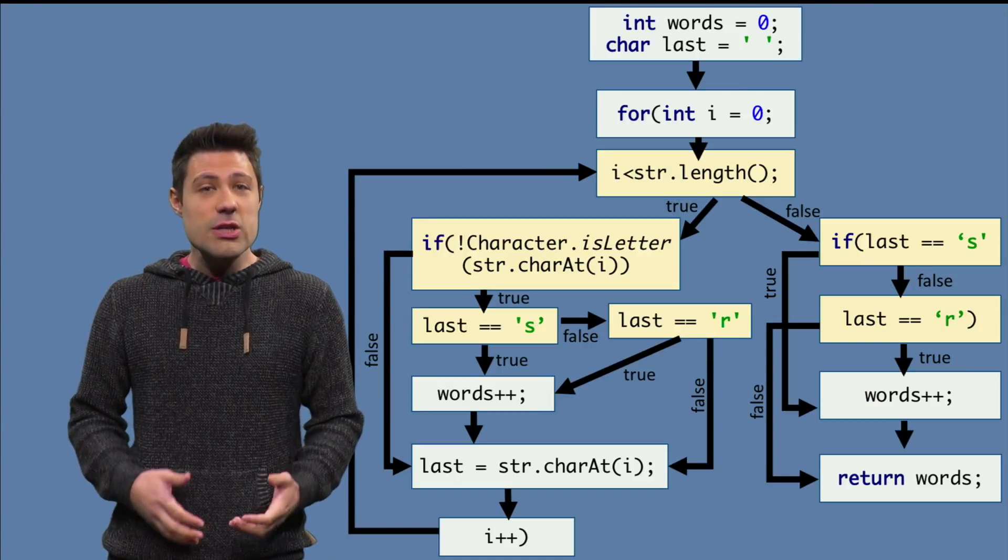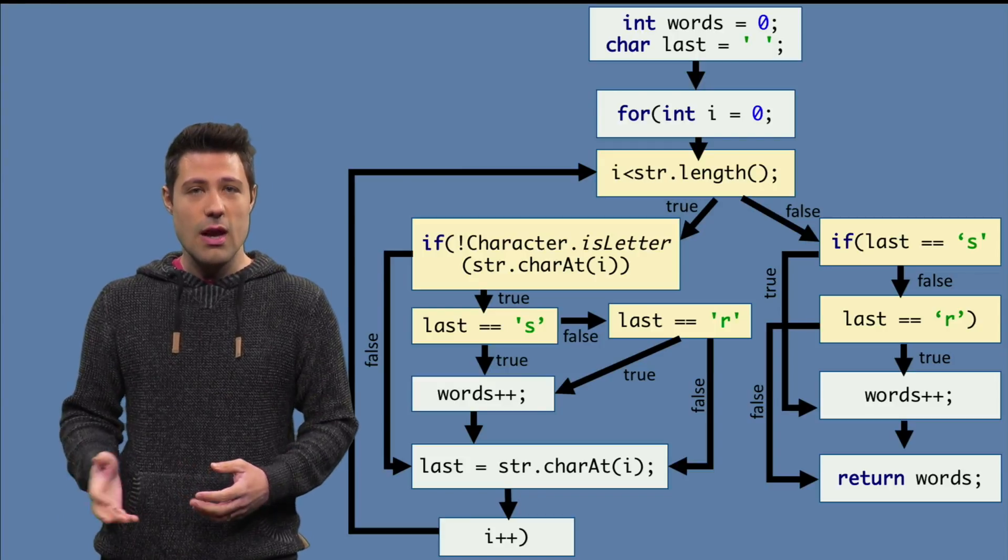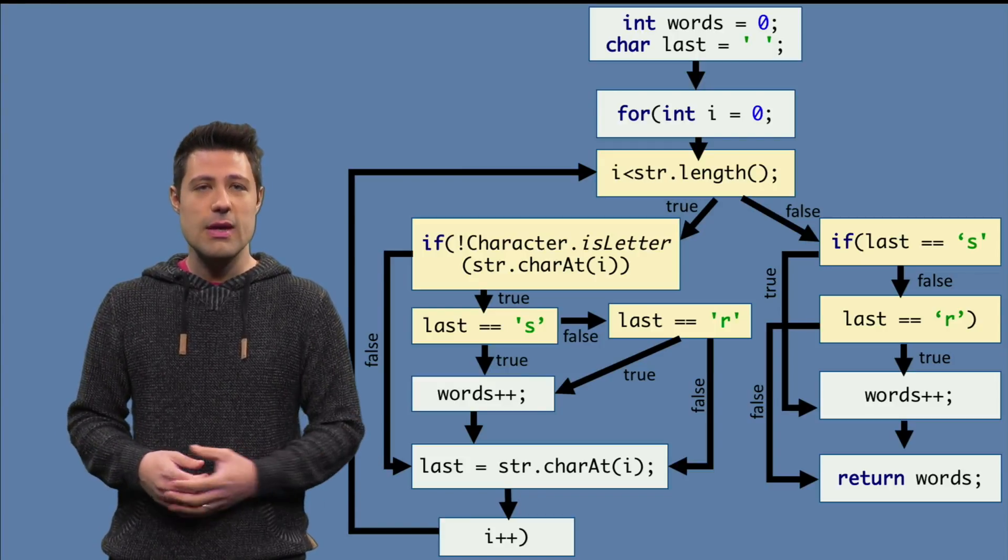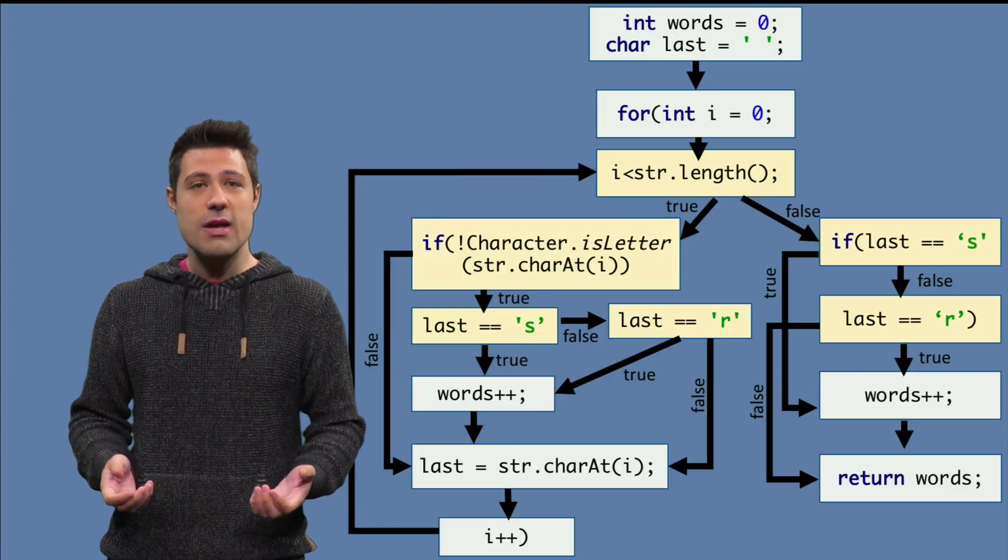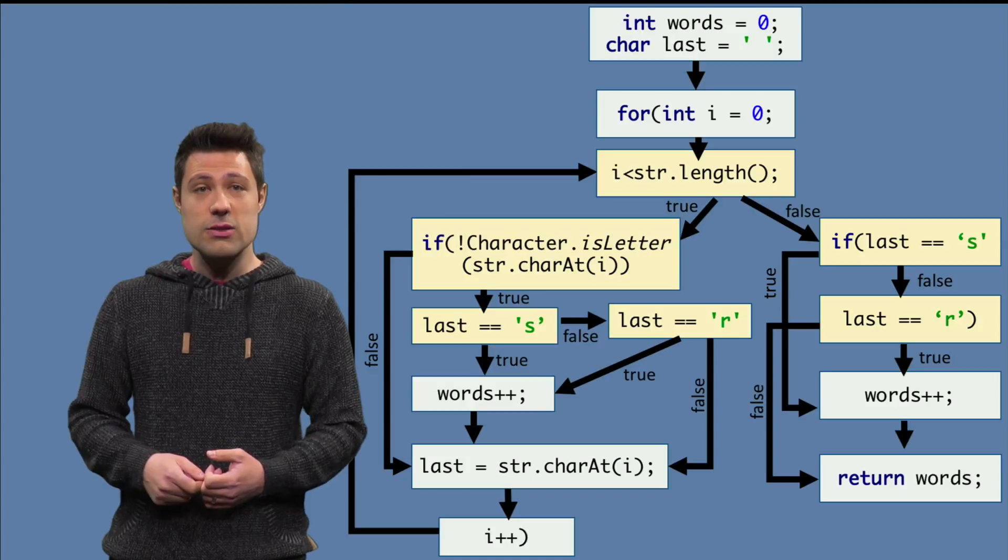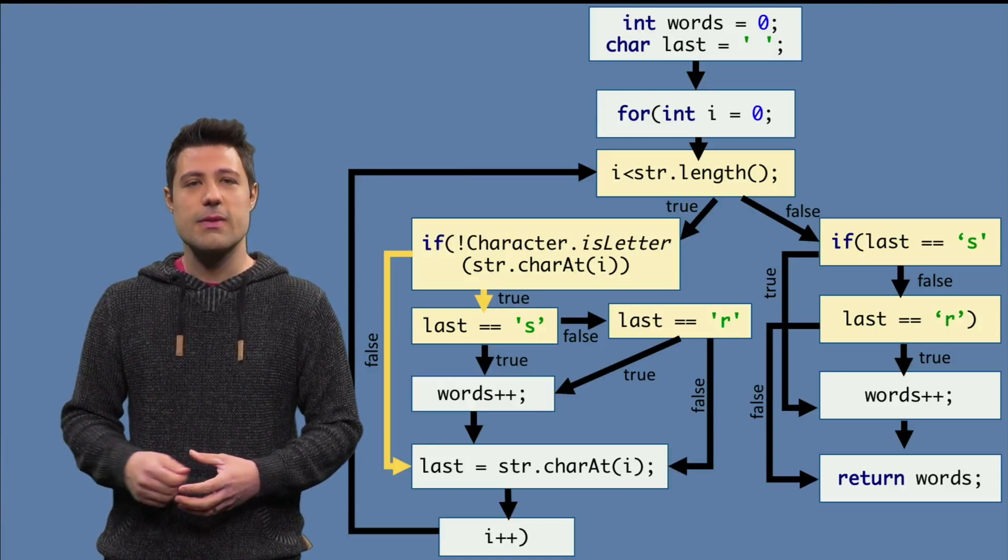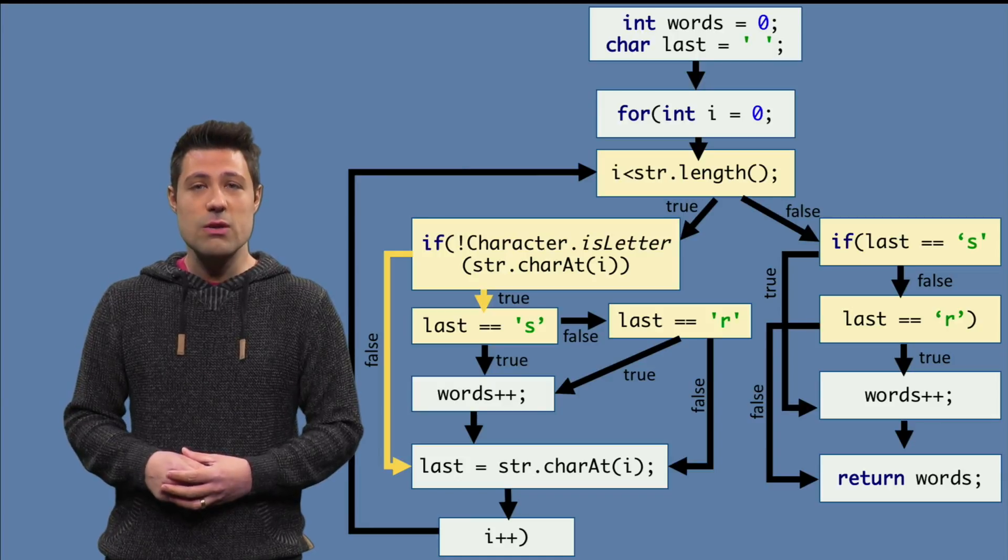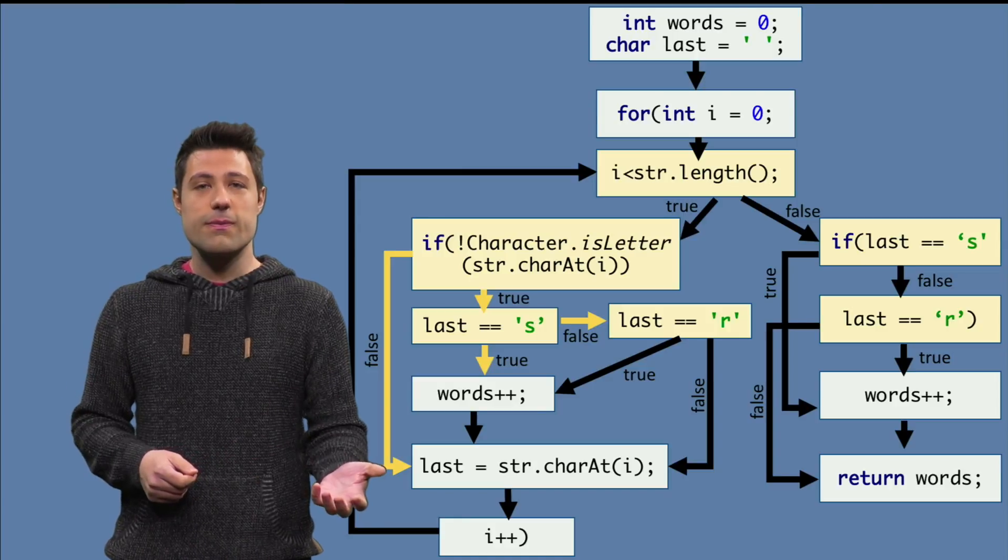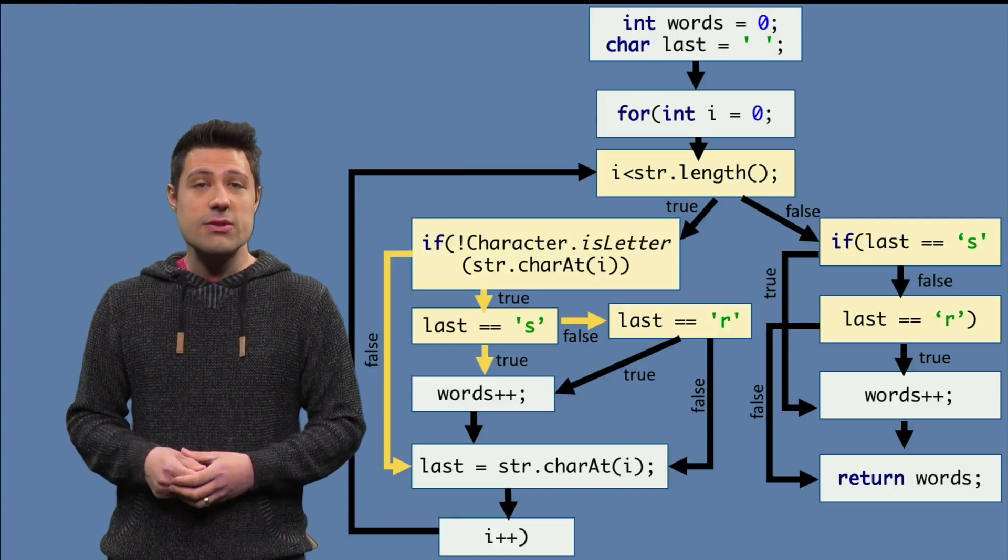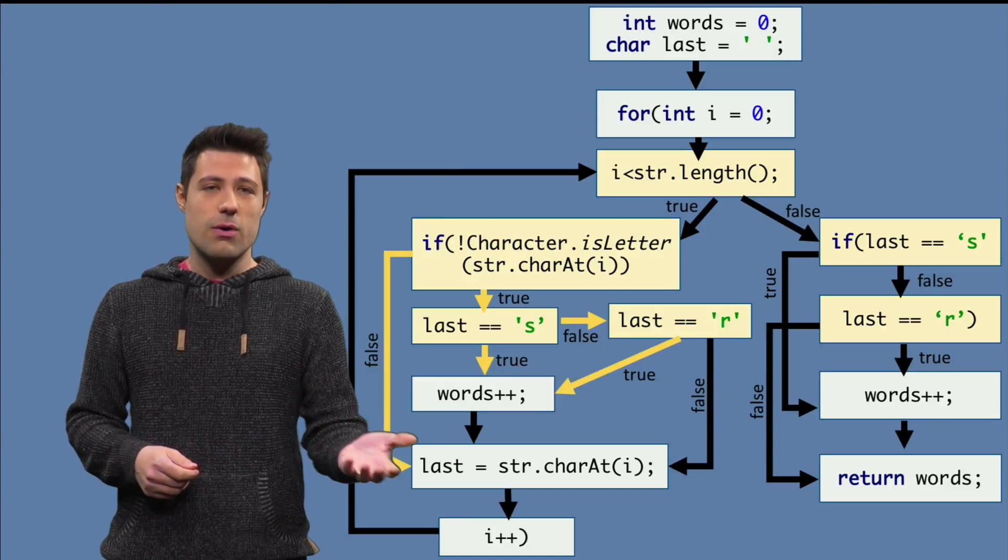Right now, we look to each condition and we make sure that we have at least one test for the true case and one for the false case. Again, if we focus on the first if there, the one with the character is letter, we need to have a test for the true and then one test for the false. Same thing for the last equals to s, we cover the true and we cover the false. Finally, for the last equals to r, we cover the true and then the false.